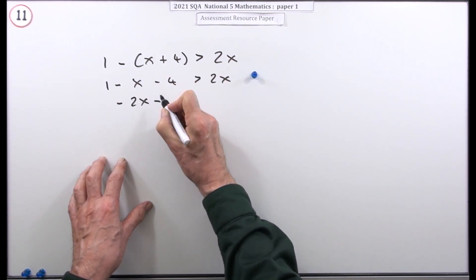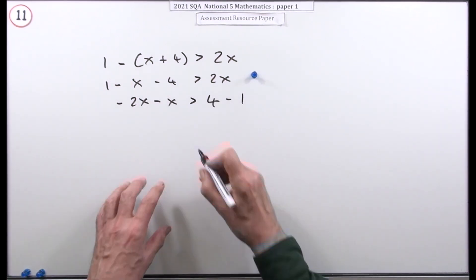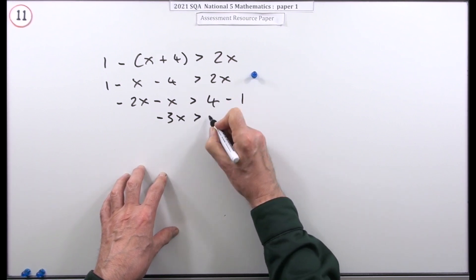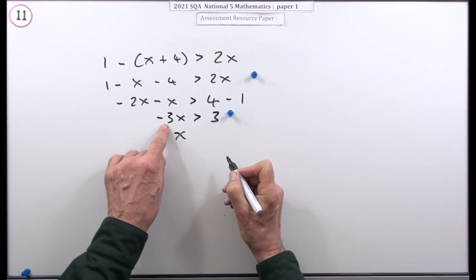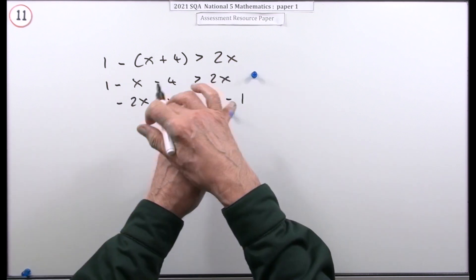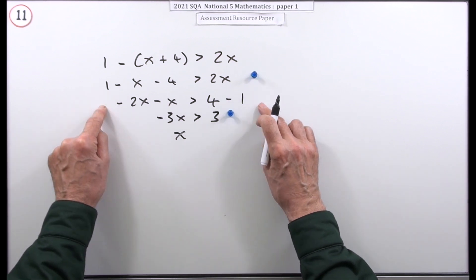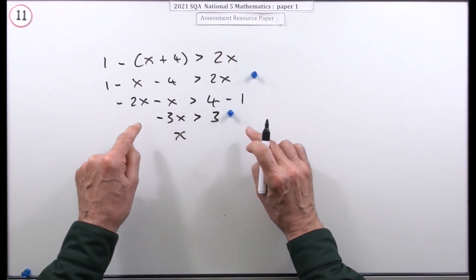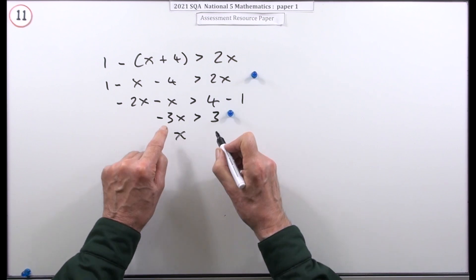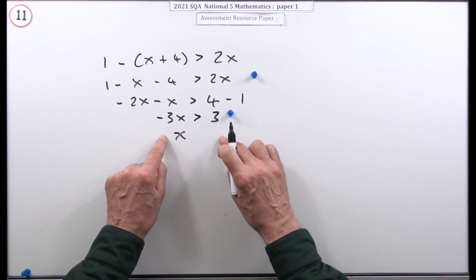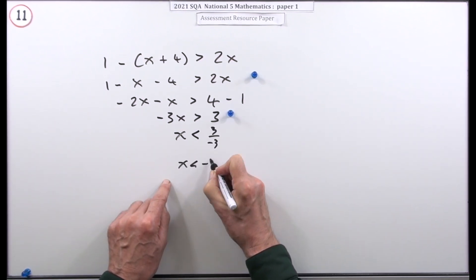I'll take the negative 2x over and bring the 4 across as plus 4 and the 1 as minus 1. That gives negative 3x is greater than 3 — getting to that line is worth a mark. Then dividing by negative 3 flips the inequality sign, giving x is less than negative 1.